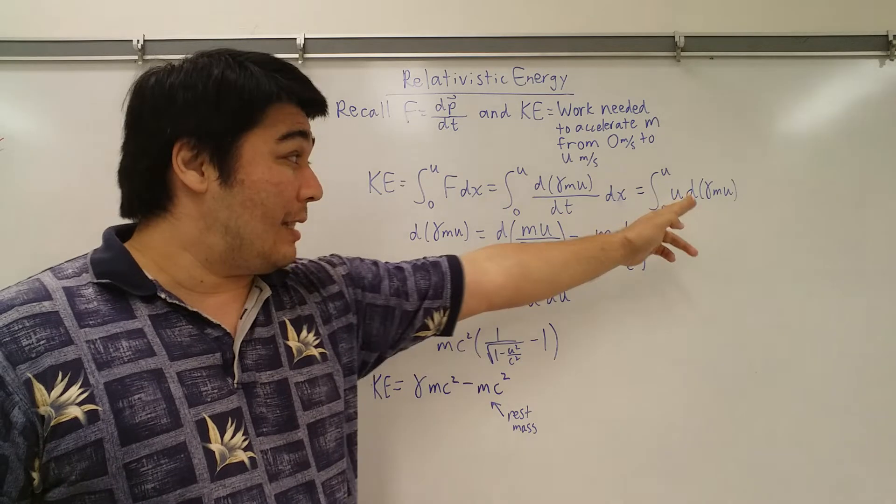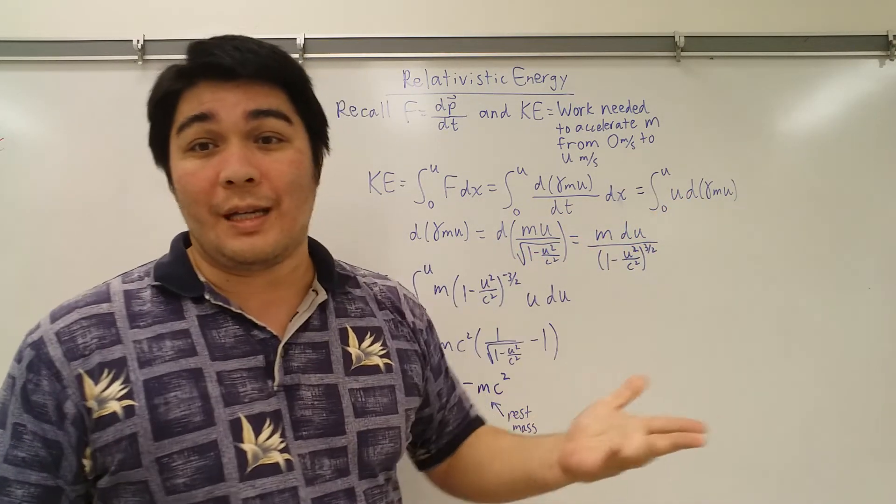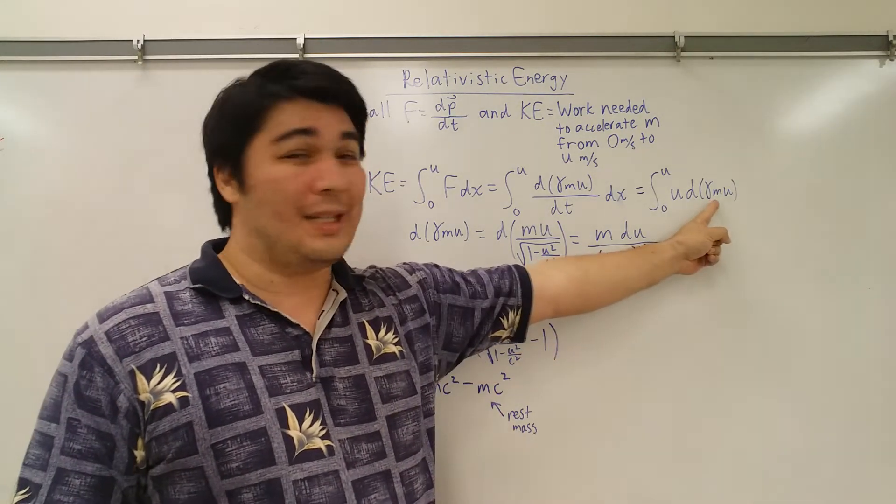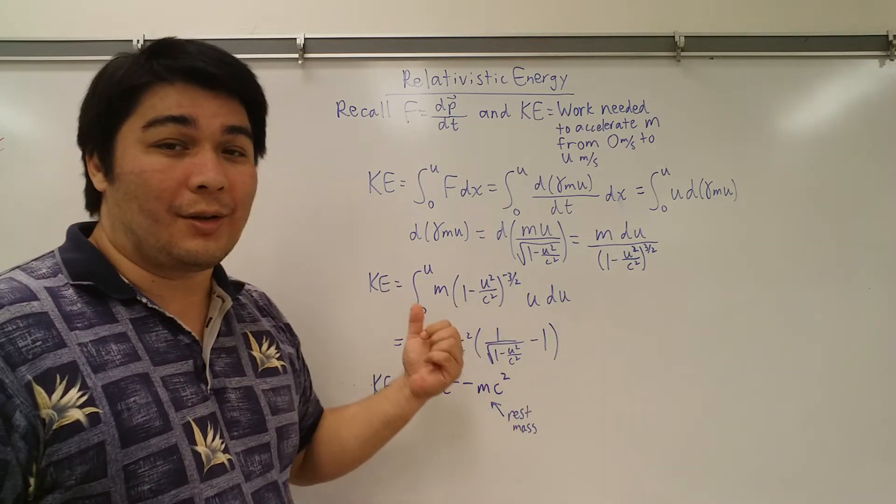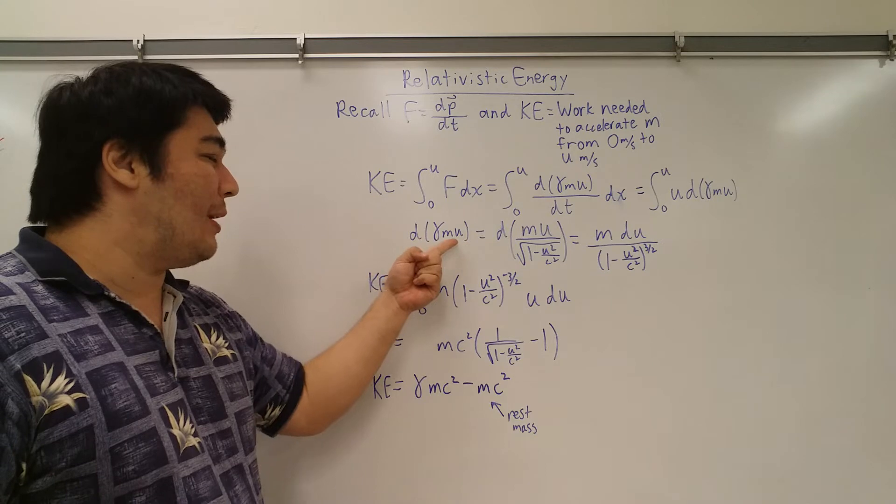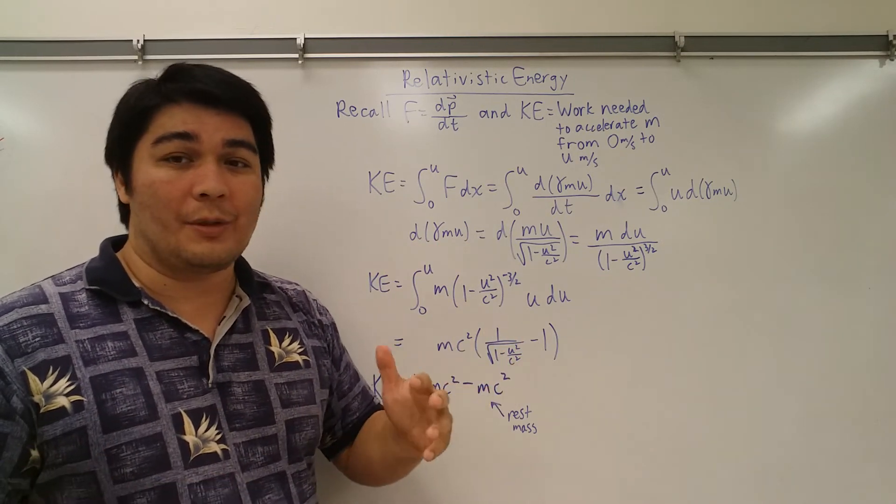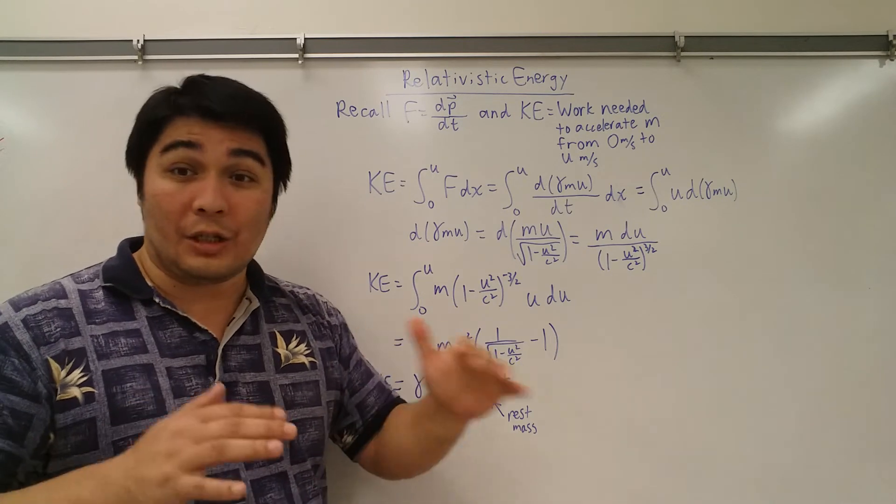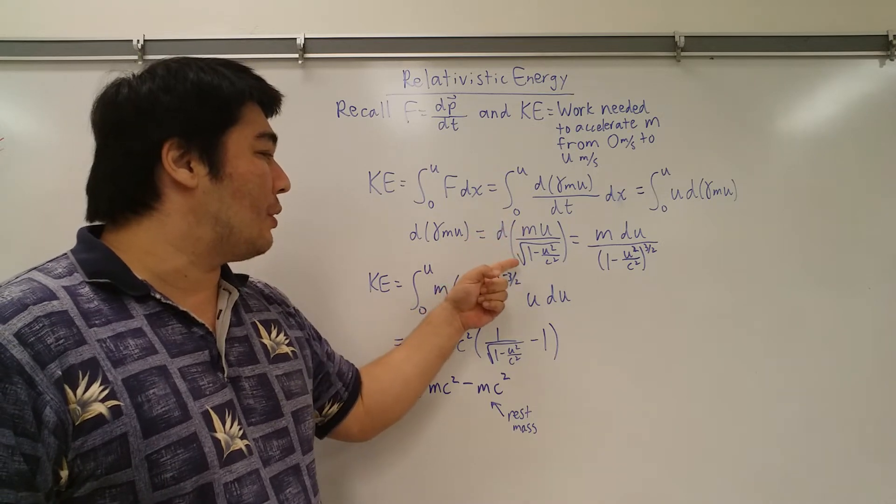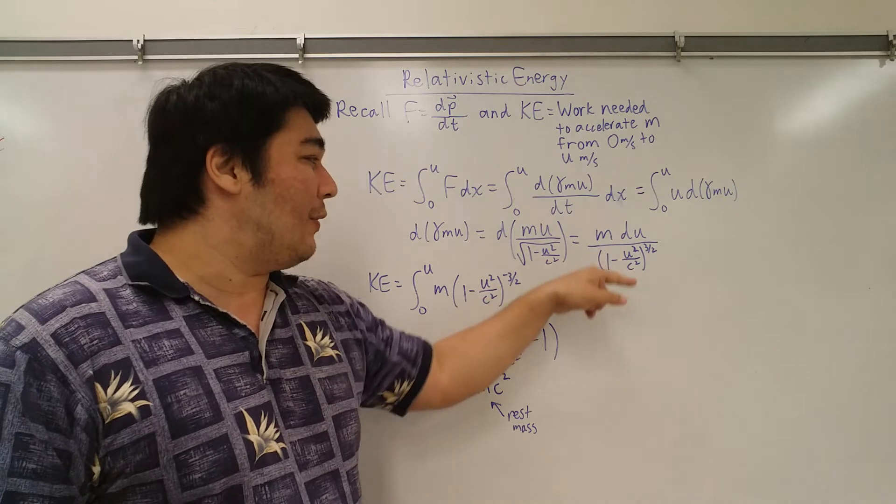Now, of course, if this was just u du, it would be a very easy integral to solve. But now that we have this crazy differential in here, we actually have to figure out what that is, which is why I go to the next step and say, okay, what is that differential of gamma mu? So first I have to get rid of my gamma. I have to actually put everything in terms of u as much as I can. So that's why I get the differential of mu over square root of one minus u squared over c squared.